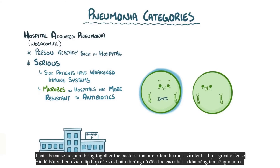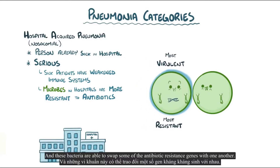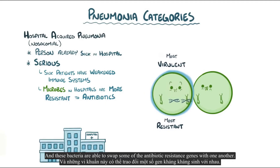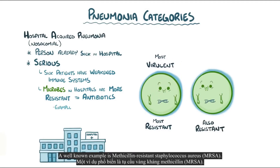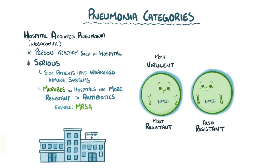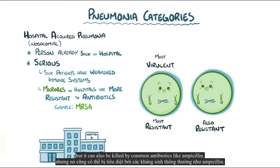That's because hospitals bring together the bacteria that are often the most virulent — think great offense — as well as the most resistant — think great defense. These bacteria are able to swap antibiotic resistance genes with each other. A well-known example is methicillin-resistant Staphylococcus aureus, or MRSA. Non-resistant Staph aureus can cause pneumonia and other infections, but it can be killed by common antibiotics like ampicillin.